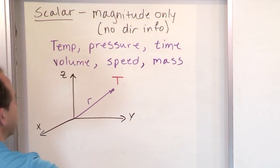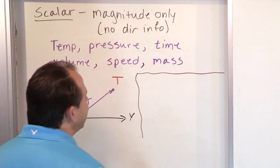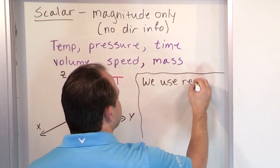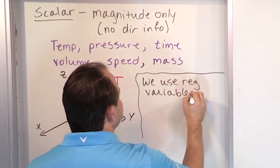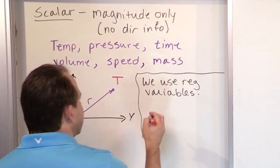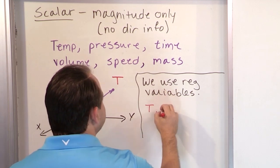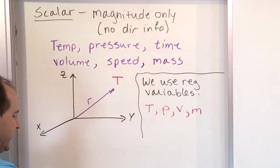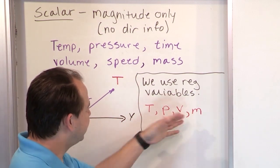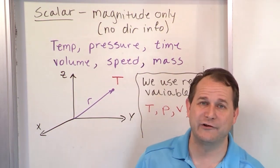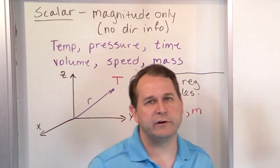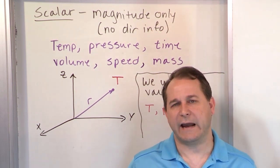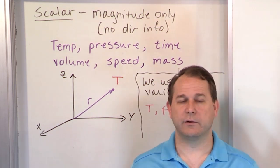Because these things are not pointing any particular direction, we use regular variable names to describe them. Scalars are just a number; we use regular variables. So we might use T for temperature, lowercase p for pressure, v for volume, m for mass, lowercase t for time. When you see a variable in a textbook with no arrow on top, it's just a scalar quantity — just a number, whatever value it is at that location.